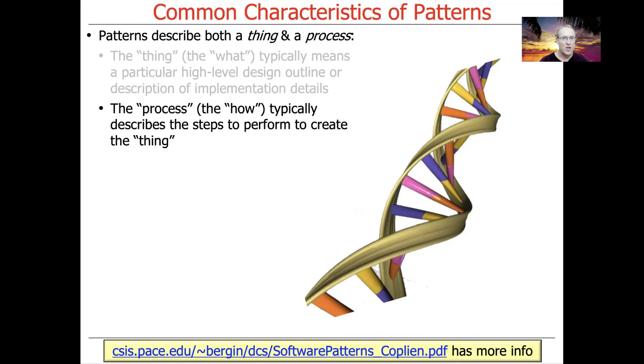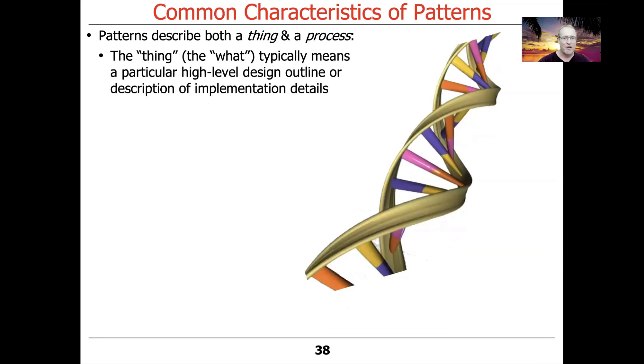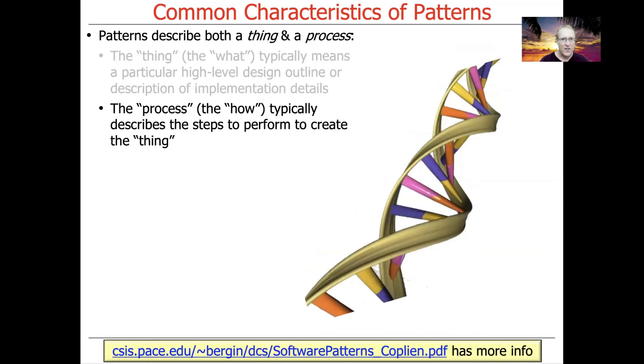Sometimes people get carried away and think it's just a thing, just the class diagram, but it's really more than the thing. It's also the way in which you put things together. This will become clear later when we talk about other types of pattern relationships, things like pattern compounds, pattern complements, pattern sequences, and pattern languages that really talk a lot more about the flow between patterns that get connected to solve larger parts of the overall software design architecture.